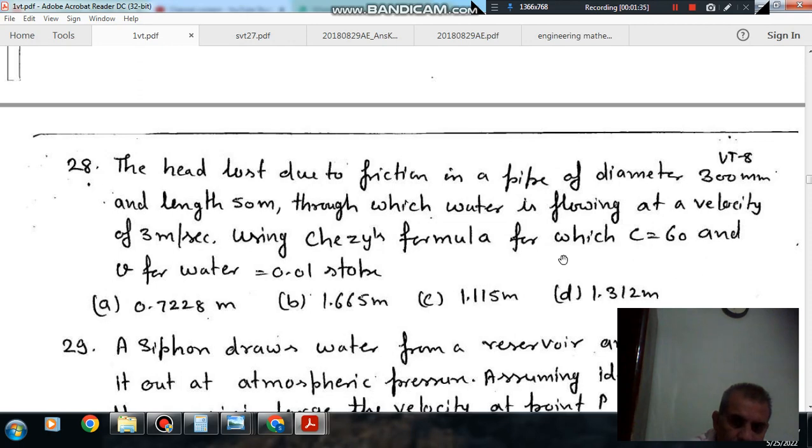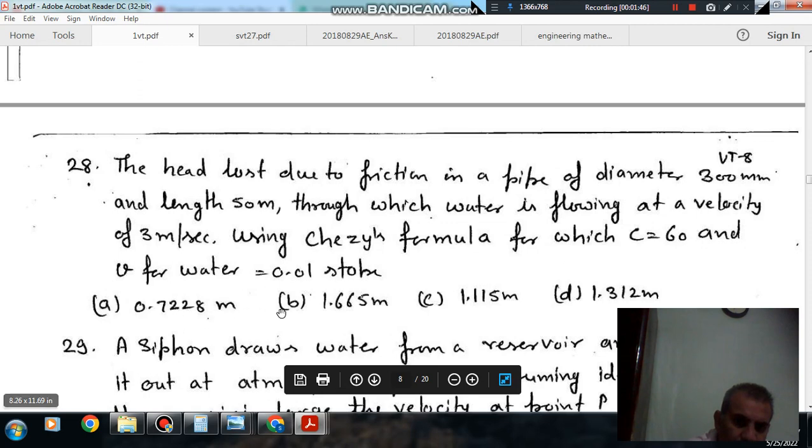Use Chezy's formula for which C is equal to 60 and mu per water is 0.01 stoke. Option A, 0.7228 m, option B, 1.665 m, option C, 1.115 m, option D, 1.312 m.